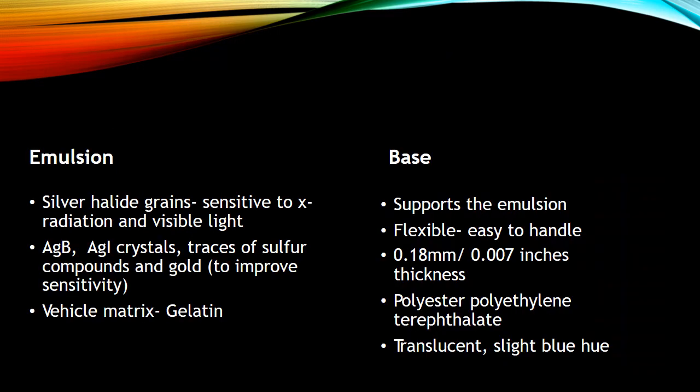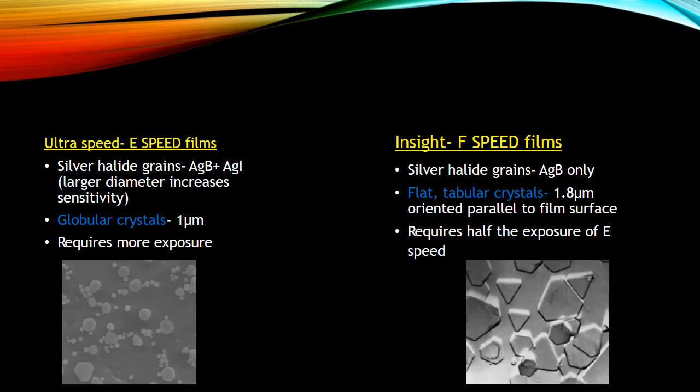Sulfur and gold make the emulsion part of the film more sensitive to light than it already is. The most important component of the emulsion is the silver halide grains. Recall film speeds A through F — A, B and C are slow speed, while D, E and F are fast speed. The structure of the silver halide grains is what determines the speed of the film.